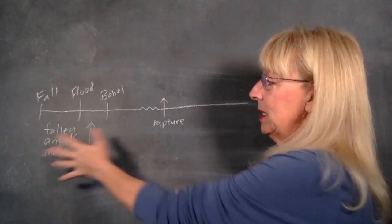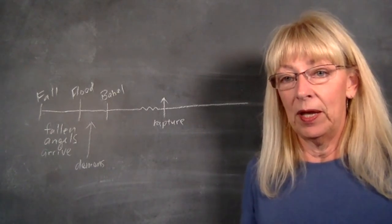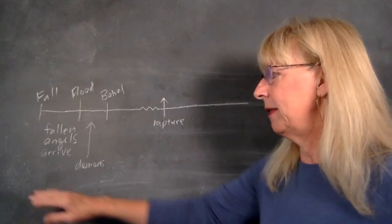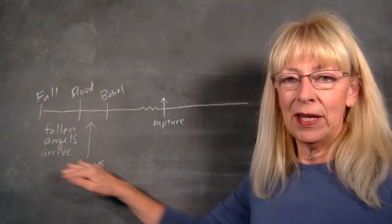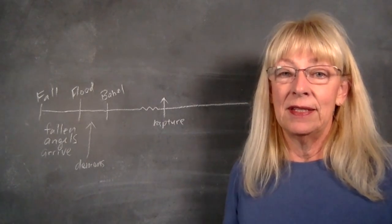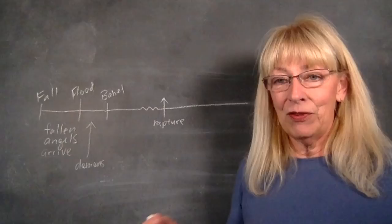This basically is the timeline of man's rebellion. There's another timeline that goes with it, and that is the rebellion of fallen entities—of spirits, fallen angels, demons, and so on.